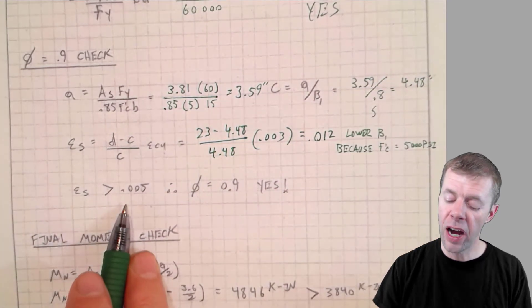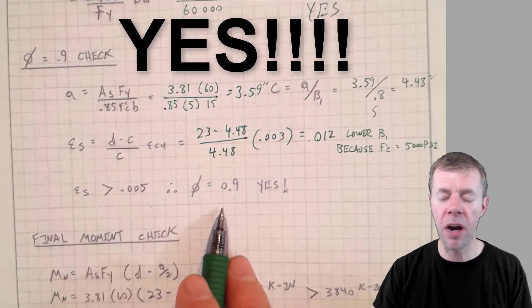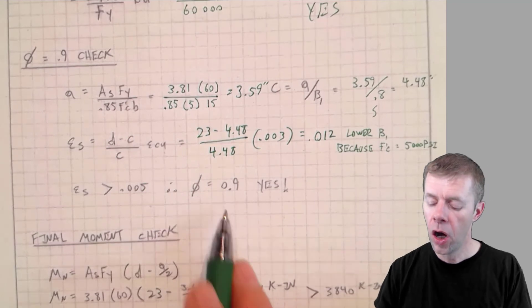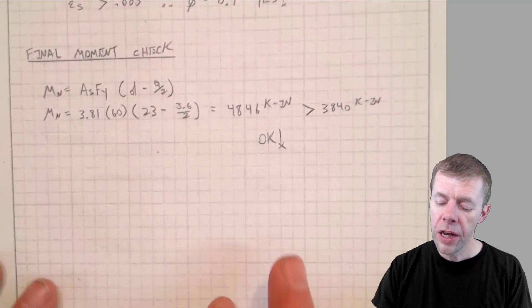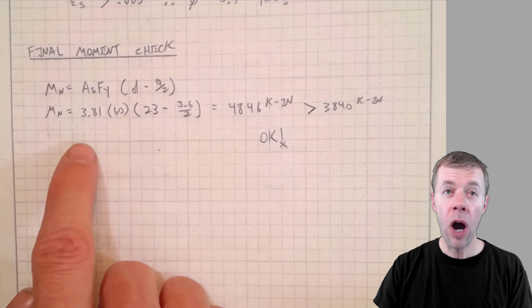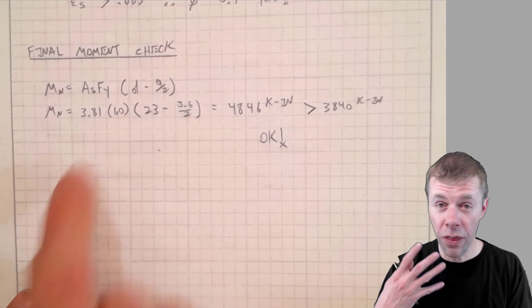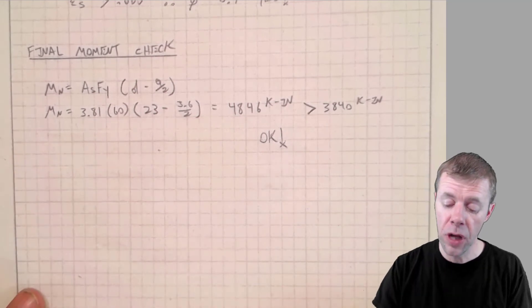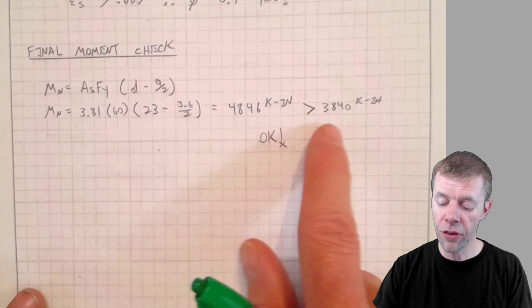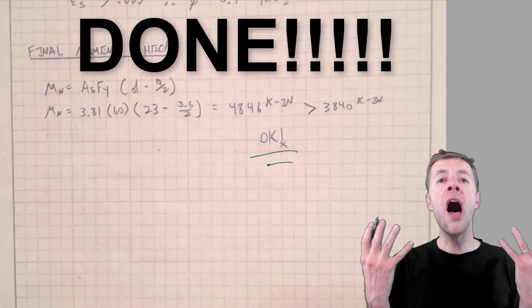Therefore, my phi is 0.9. Good assumption. Onward we go. Here's our final moment check. Now, I'm just verifying that I didn't do anything wrong, didn't make any bad assumptions. I get 48.46. It's greater than 38.40. Done!